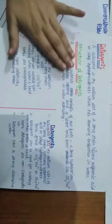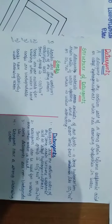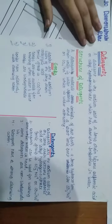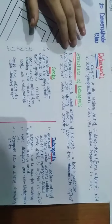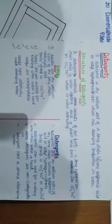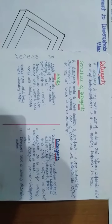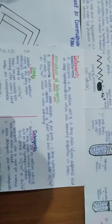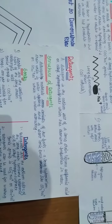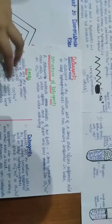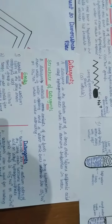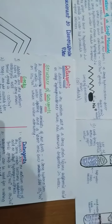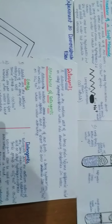A detergent is a sodium salt of a long chain benzene sulfonic acid or alkyl hydrogen sulfate which has cleansing properties in water. The structure of detergent is similar to soap. It consists of a long hydrocarbon chain which is water-repelling, and a short ionic part containing ionic groups like SO3-Na+ and SO4-Na+ which is water-attracting. The water-attracting part is in the water and the water-repelling part is not.